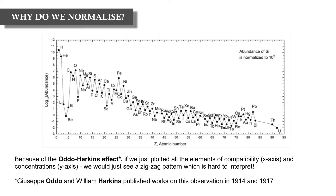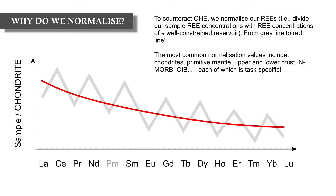If we plot elements in order of increasing atomic number, it's quite difficult to interpret because elements with even atomic numbers are much higher in abundance than adjacent elements with odd atomic numbers. When we normalize, we smooth this pattern. To counteract the Oddo-Harkins effect we divide our sample concentrations by a known reservoir — going from zigzag gray patterns to smooth red patterns that are much easier to interpret.